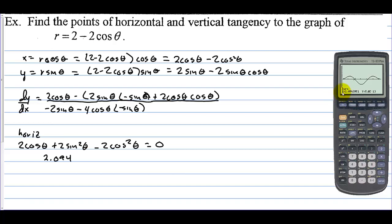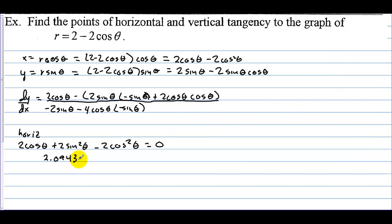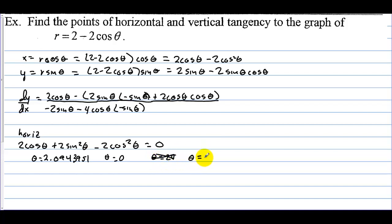That value, stored as x, is 3.9512... wait, so theta equals approximately 3.9512. We also have theta equals 0, and theta equals 2 pi — but that's really the same thing as 0. There is one more value we need to find.